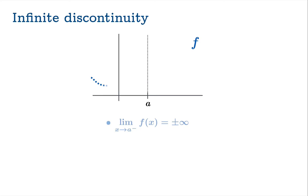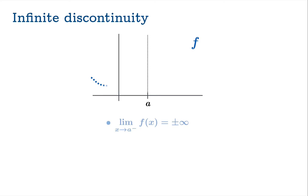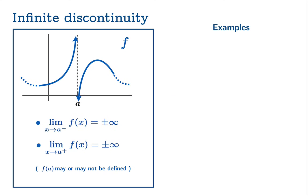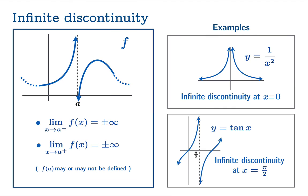An infinite discontinuity is pretty much what it sounds like. The limiting value from one side is positive or negative infinity, and the limiting value from the other side is positive or negative infinity. We won't care what the actual definition of the function value is at a. There are a lot of classic examples: 1 over x squared has an infinite discontinuity at the origin, and tangent x has an infinite discontinuity at the argument pi over 2.